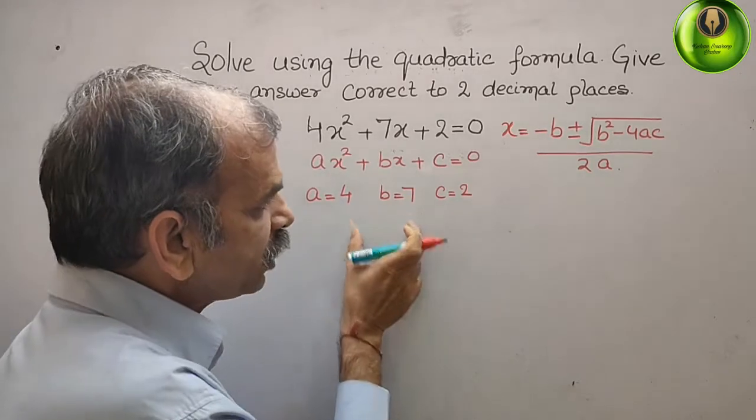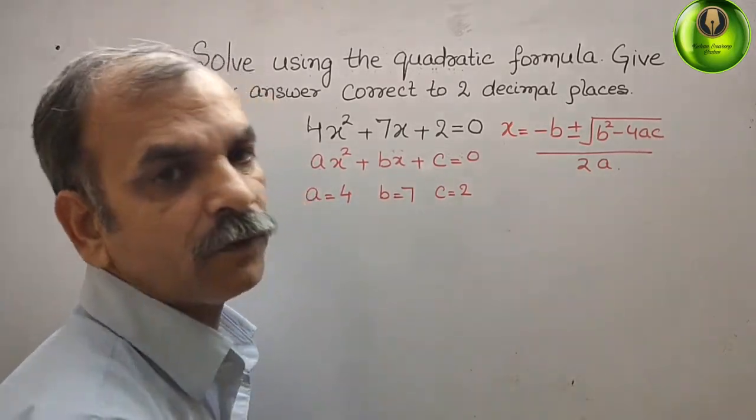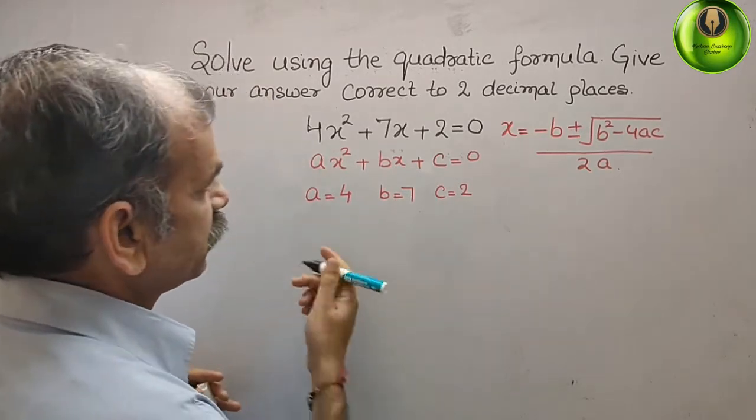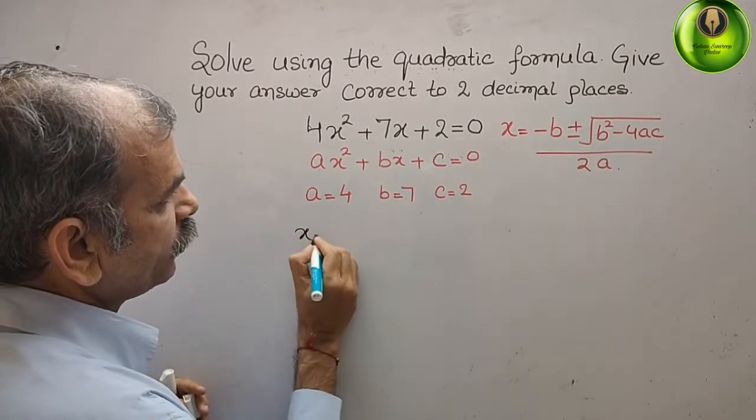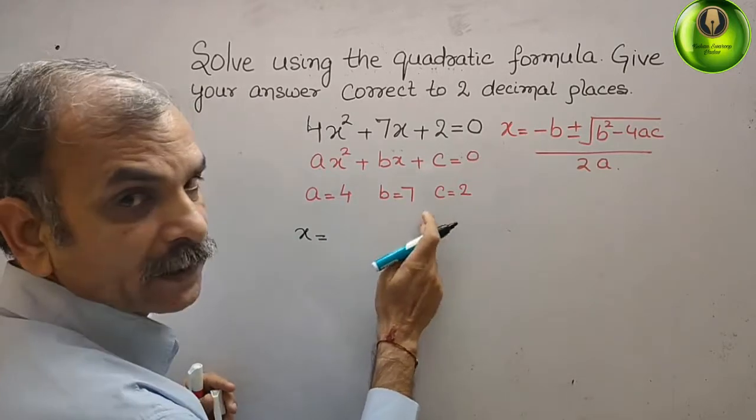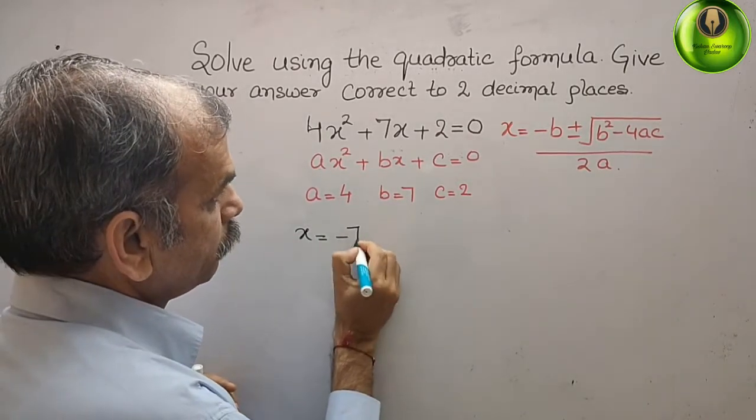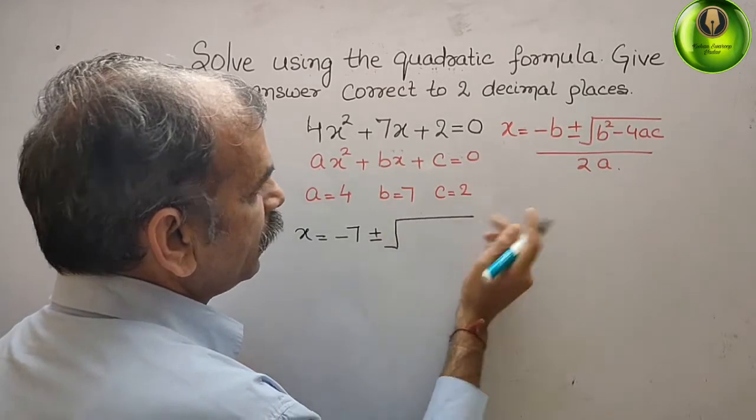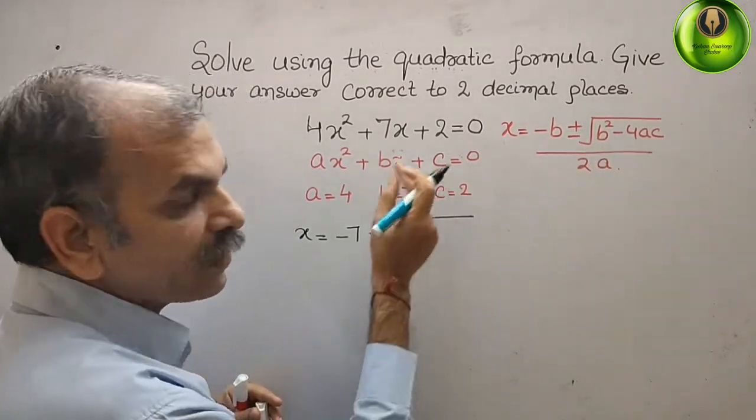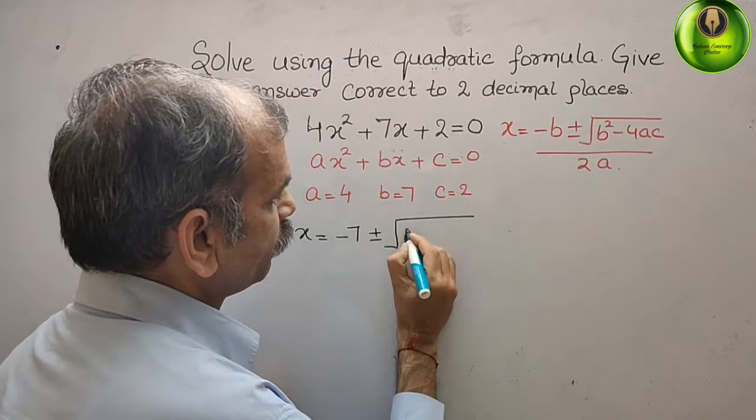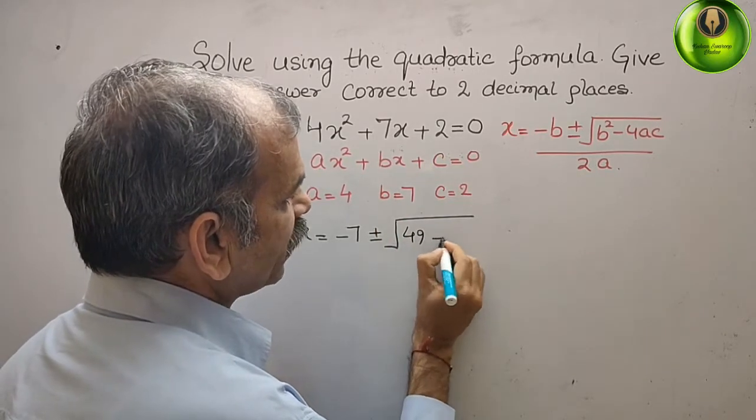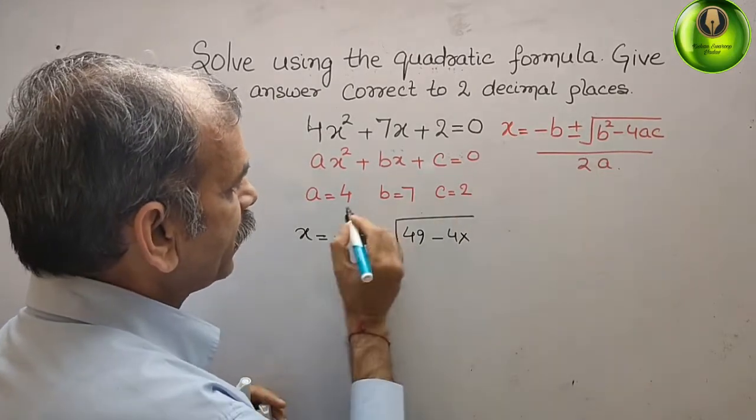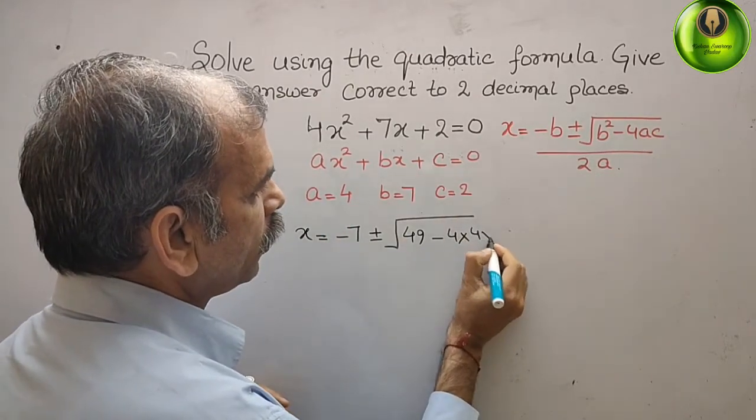Now substitute this value in your quadratic formula. What we will get? We get x = -b, that means -7 ± √(b², that means 7² is 49, minus 4 into a is 4 into 2)